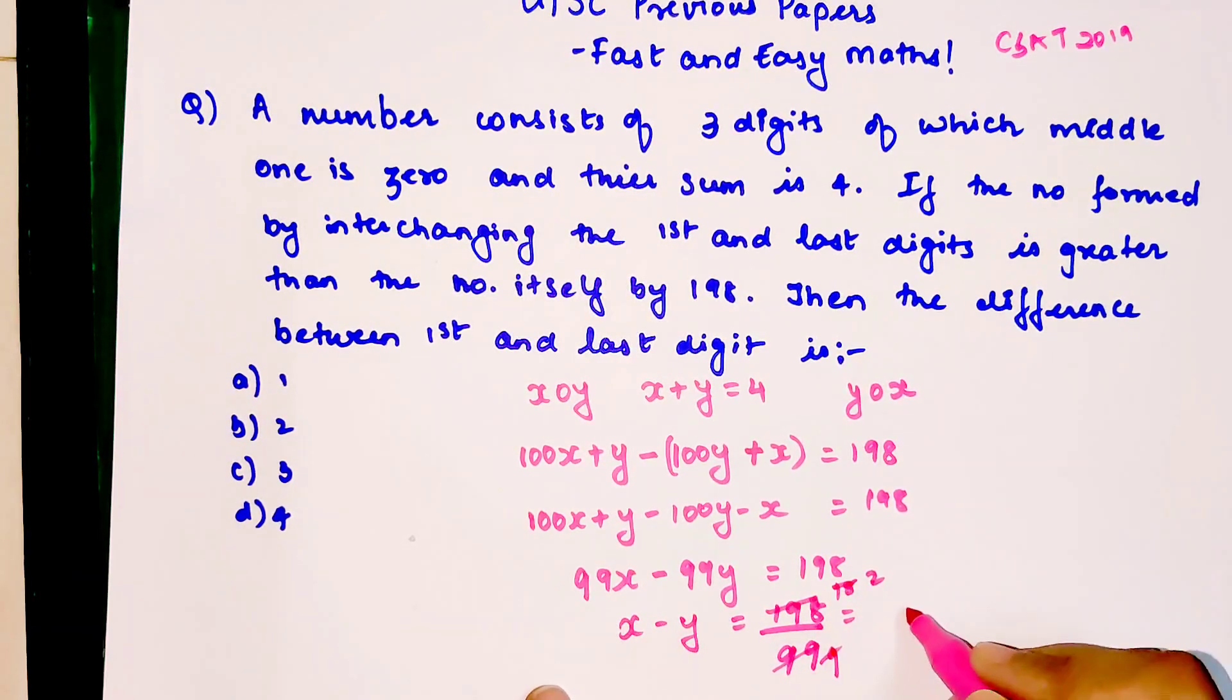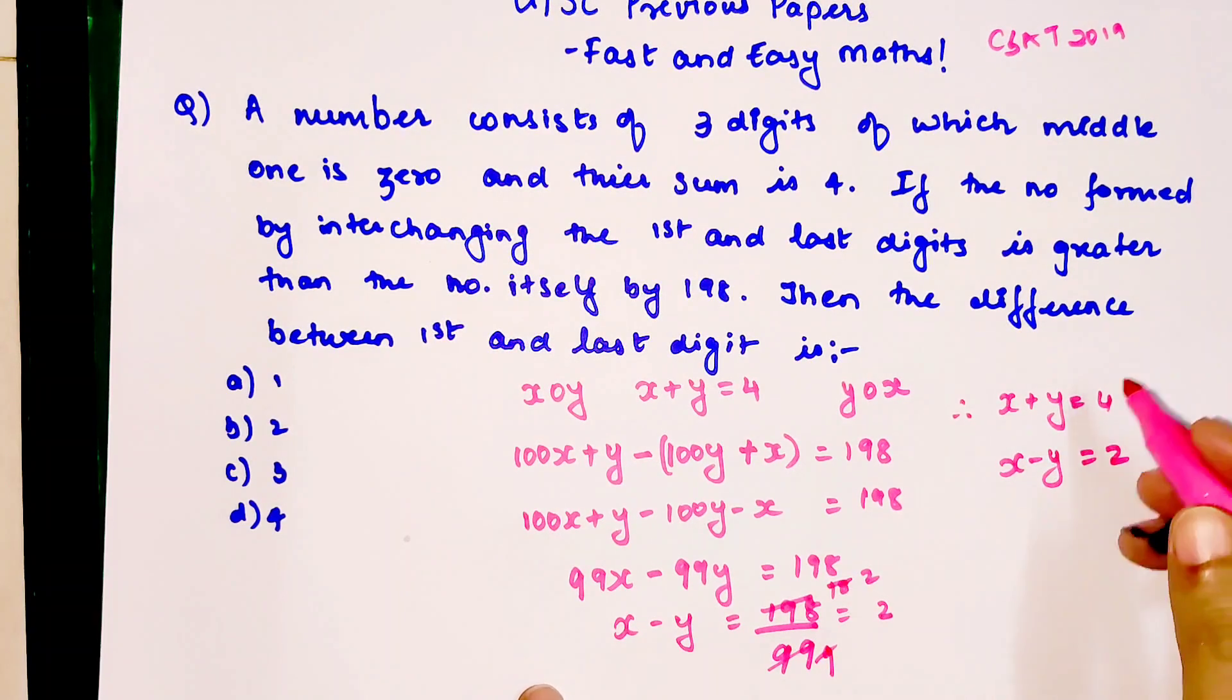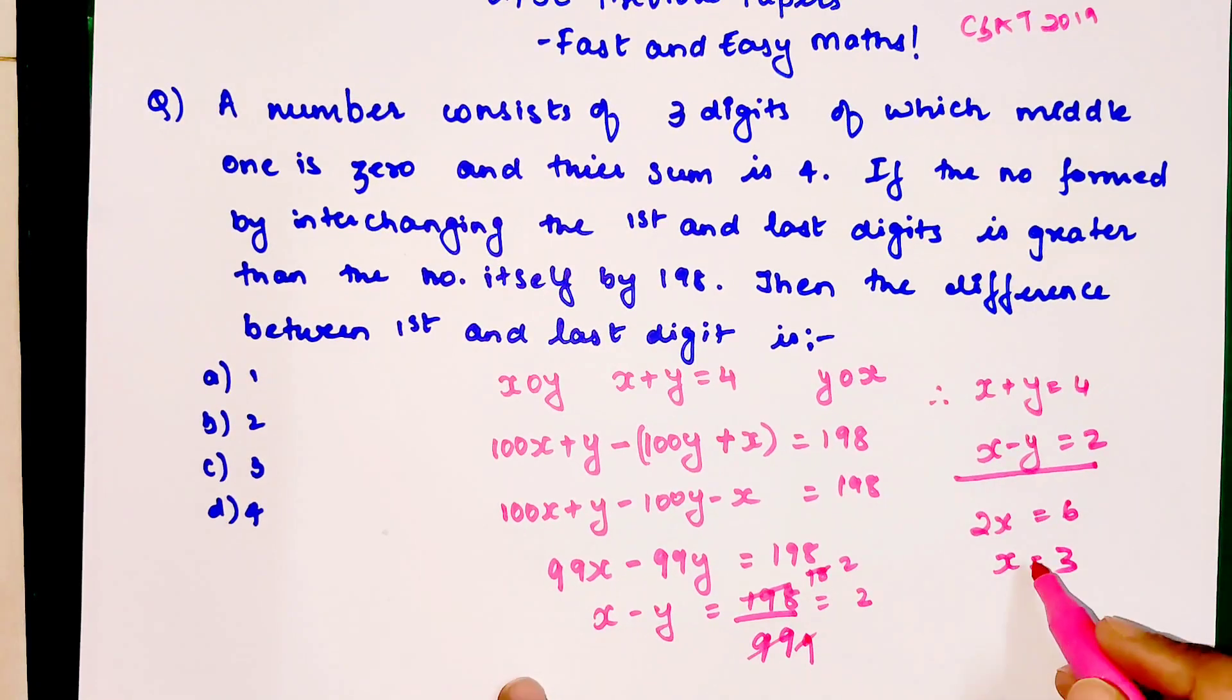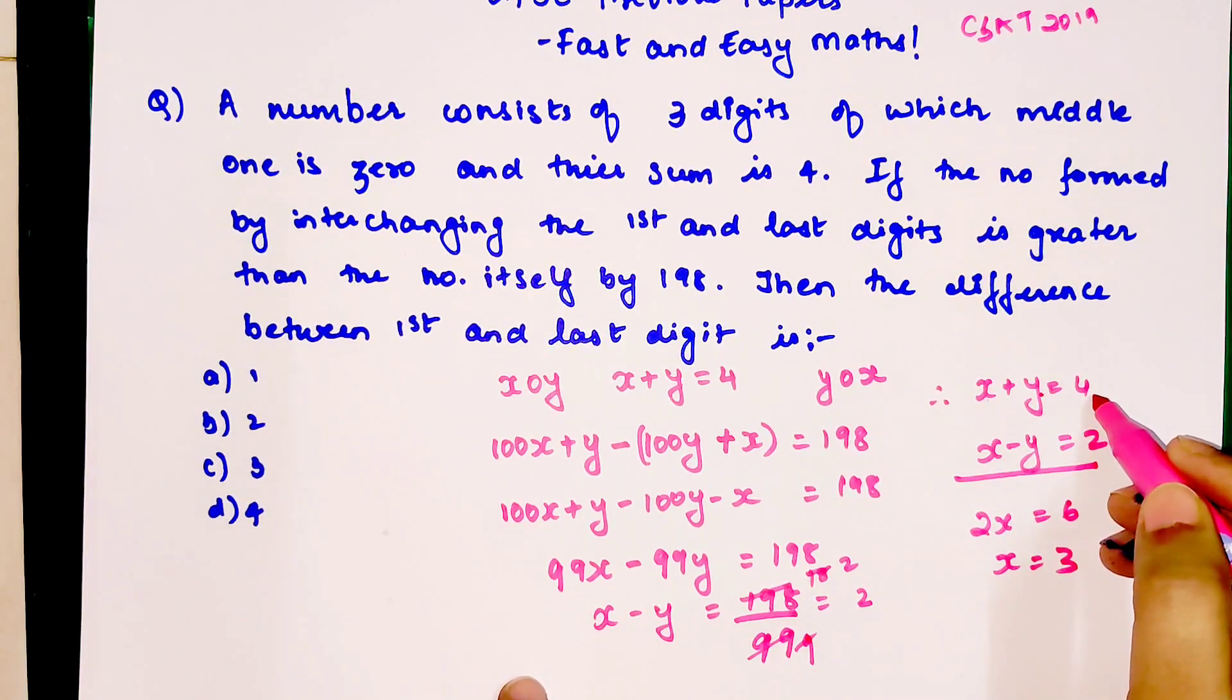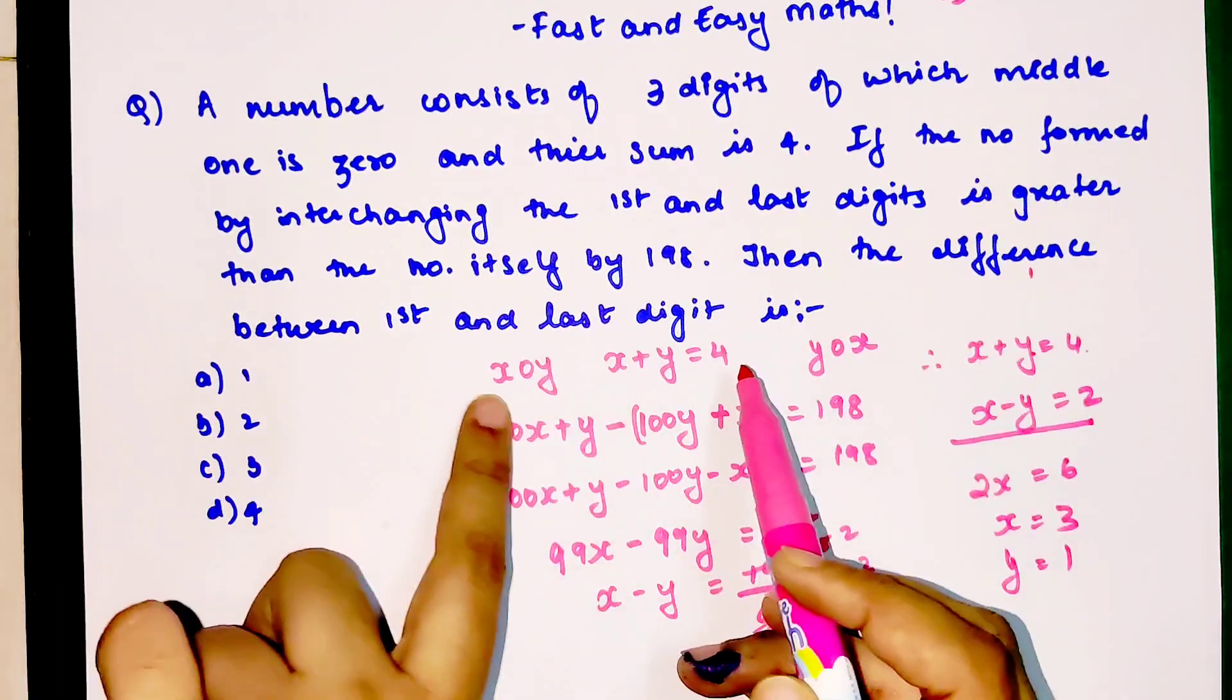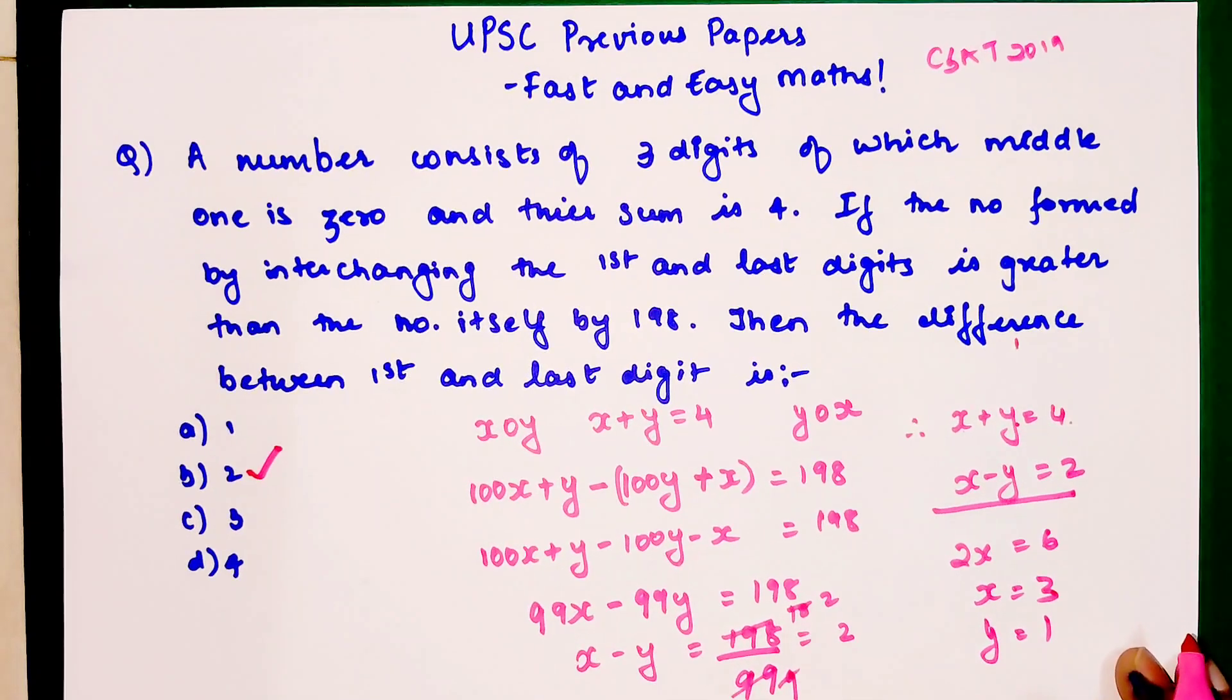Therefore x plus y equals 4 and x minus y equals 2. When you add these two you get 2x equals 6, so x equals 3. If x equals 3 then y equals 1. Then the difference between the first and last digit is 3 minus 1, which equals 2. The answer is 2.